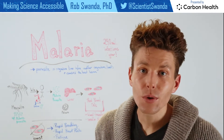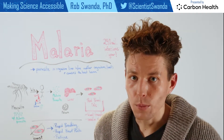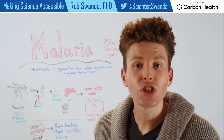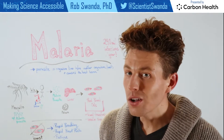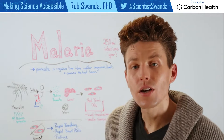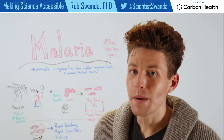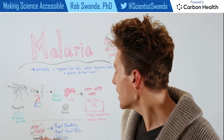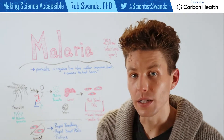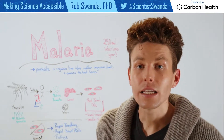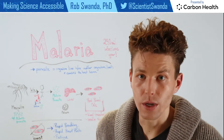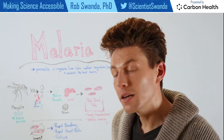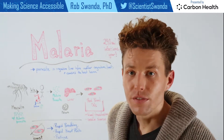It can also be transmitted through other less common ways, such as blood transfusions or the sharing of needles. Once one's red blood cells are infected, that's where the most amount of damage can occur. It can even lead to the bursting of those red blood cells, causing some of the more severe consequences of malaria, such as rapid breathing, rapid heart rate, and even fatigue.